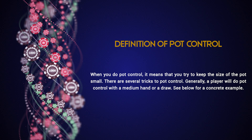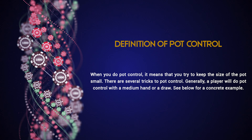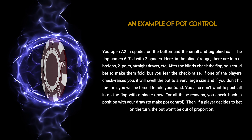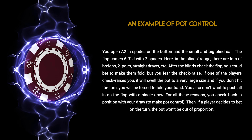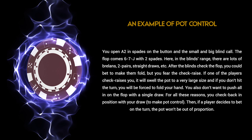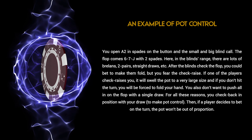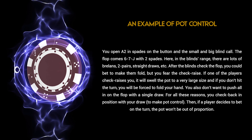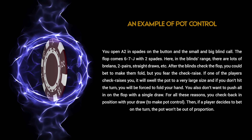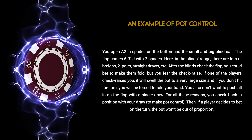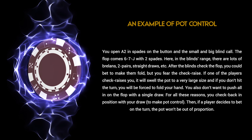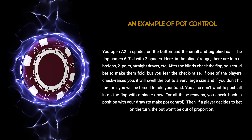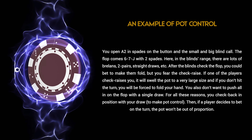Here is a concrete example of pot control. You open ace-two in spades on the button and the small and big blind call. The flop comes 6-7-Jack with two spades. In the blinds' range there are lots of strong hands — two pairs, straight draws, etc. After the blinds check the flop...